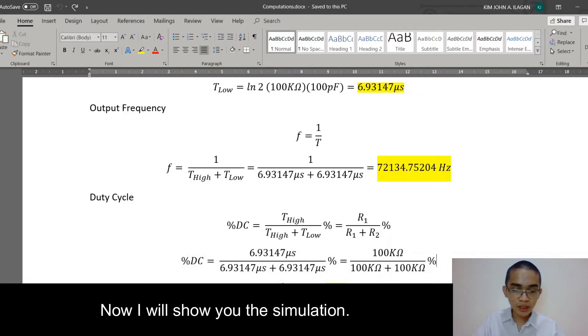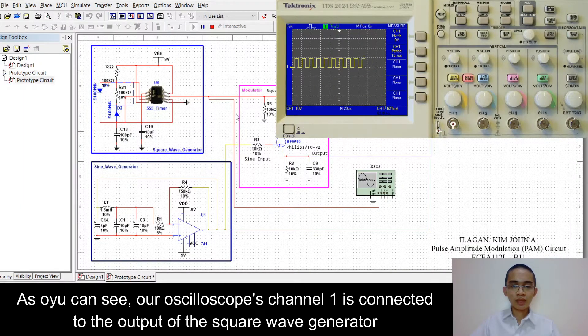Now, I will show you the simulation. As you can see, our oscilloscope channel 1 is connected to the output of the square wave generator.